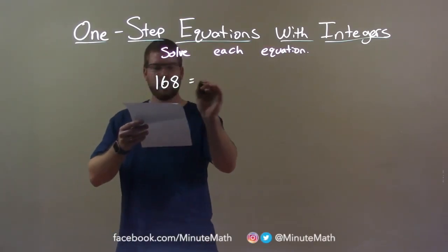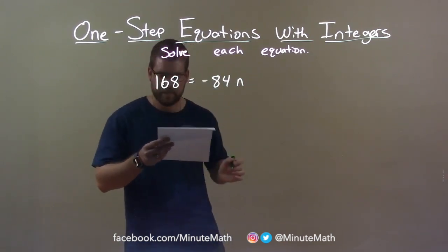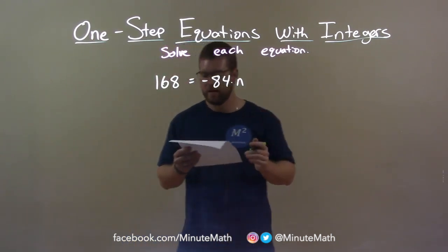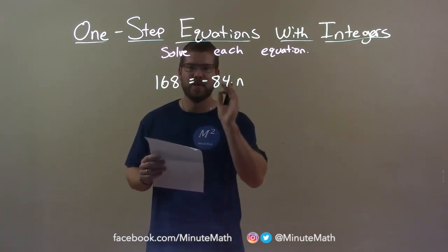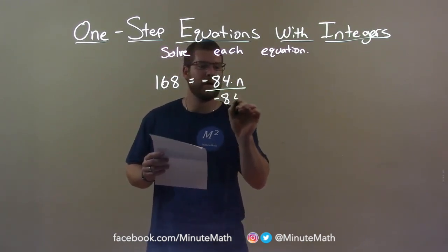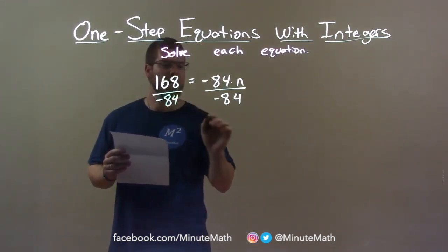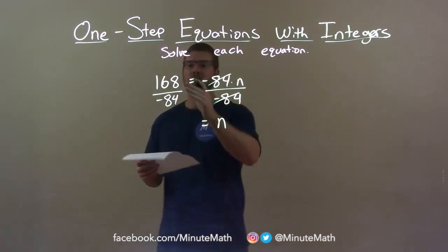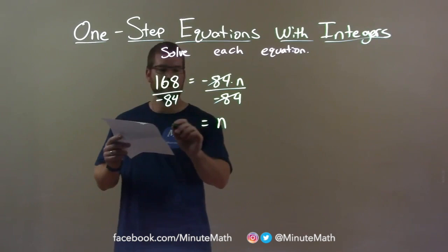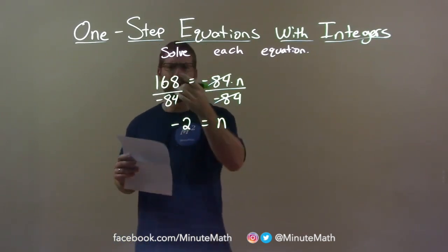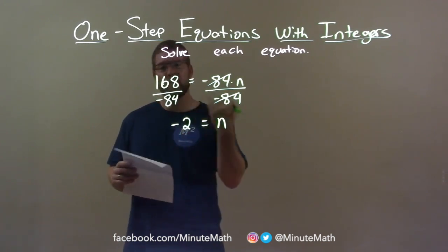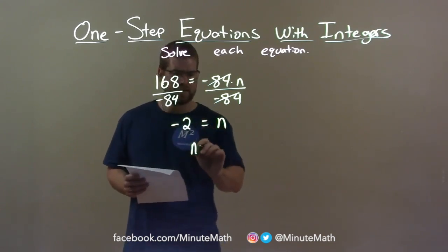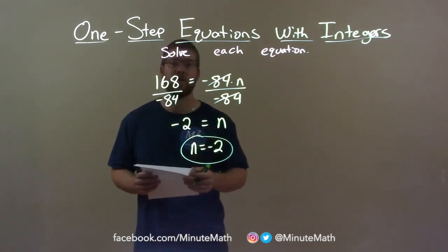168 equals negative 84n. I want to get n by itself. There's a multiplication between negative 84 and n. Opposite of multiplication is division. So I divide both sides by negative 84. The negative 84s cancel, leaving n by itself on the right. On the left, 168 divided by negative 84 is negative 2 — positive divided by a negative is a negative, and 168 divided by 84 is 2. So n equals negative 2 is our final answer.